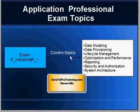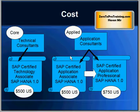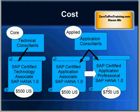Now let's talk about the cost of the three certifications. SAP certifications are costly, and I have covered in detail in another video whether it makes sense to achieve certifications or not — it's not an absolute yes or no answer, it depends on your situation. The cost for SAP HANA certifications is $500 for the associate level certifications, both technical and application, and $750 for the professional level certification. Thank you so much for joining us.